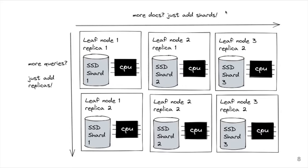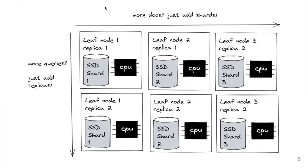Question: can you speak to the difference between partitions and shards? Those are really the same thing. Some backends decide to use the word 'shards,' some use 'partitions,' but both mean a subset of the data. You divide your big dataset across multiple nodes, and those small pieces are called partitions or shards. Replicas are for fault tolerance — you add replicas so you can lose nodes without losing data. You add shards to accommodate a growing dataset: if your dataset is growing, you add more shards and more nodes.